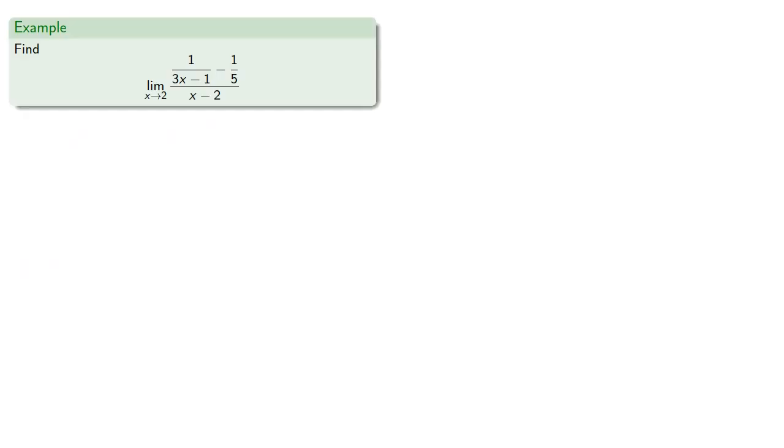So let's try to find this limit. We note that our denominators are 3x minus 1 and 5, so if we multiply by 5 times 3x minus 1, the product of the two denominators, we can eliminate them both.